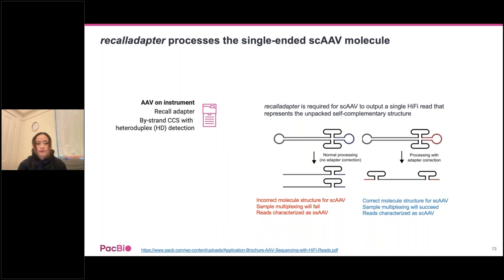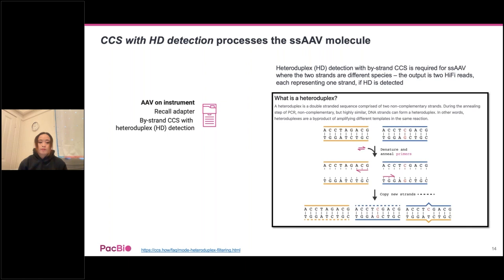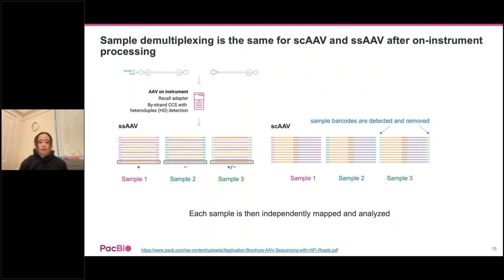The second part of the on-instrument AAV mode is bistrand CCS with heteroduplex detection. This is required for single-strand AAV when the two strands are different species. If heteroduplex detection shows the two strands are different, the output is two HiFi reads, one representing each strand. After the AAV on-instrument mode, single-strand and self-complementary AAV are correctly processed; sample barcodes are detected and removed, and each sample is independently mapped and analyzed.